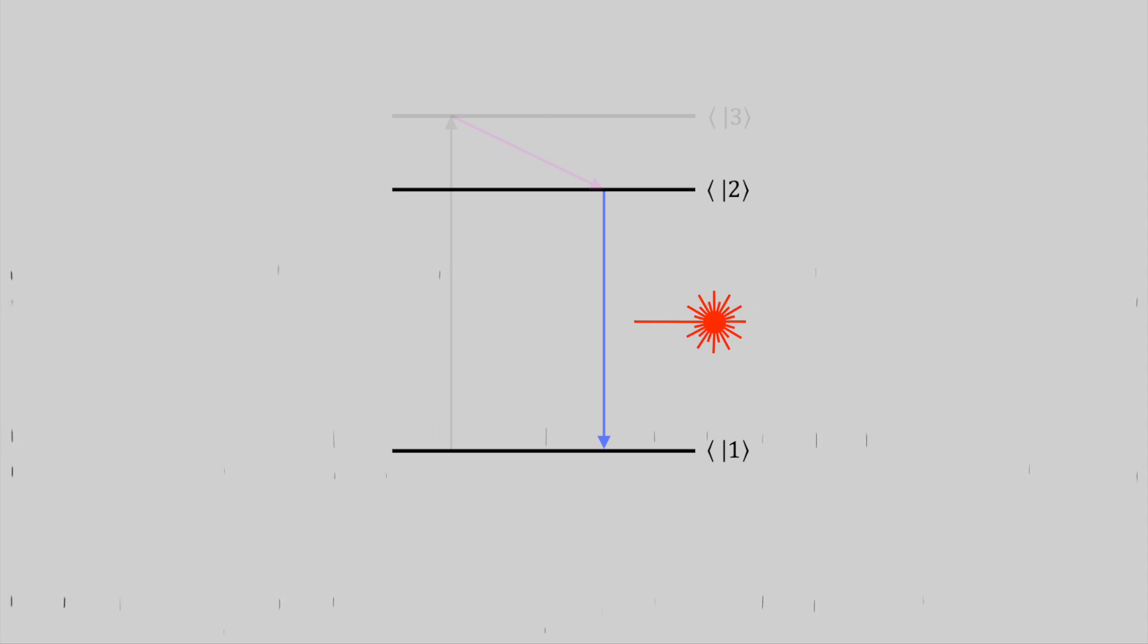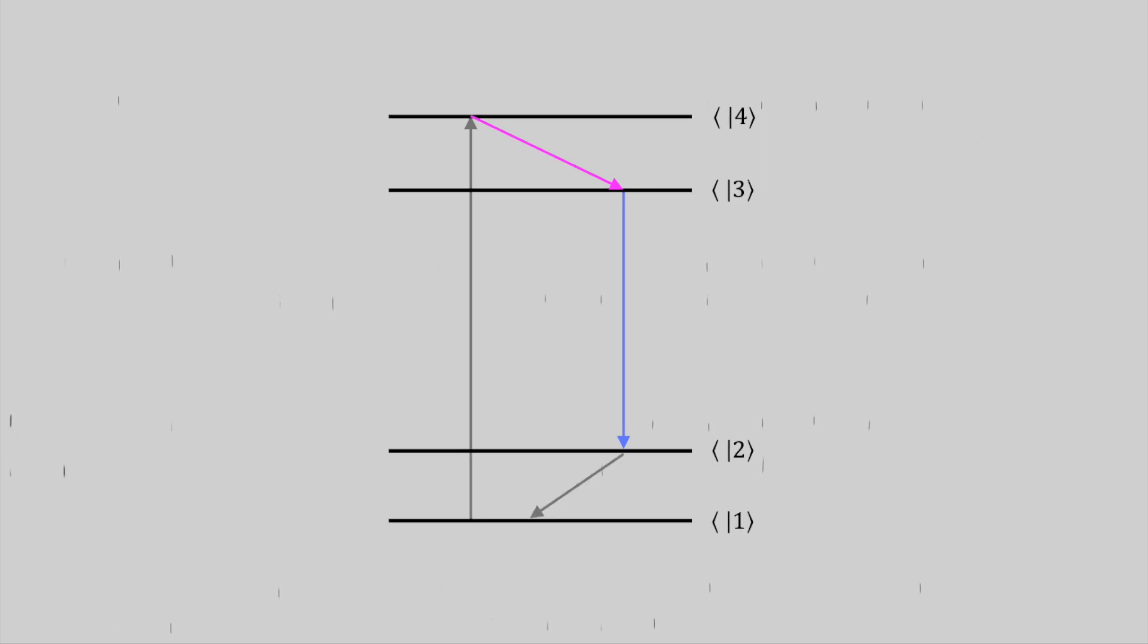So the only downside of this three-level system is that we need a lot of energy to get all the electrons from level one to level three. This, of course, sucks. So what do we do? Fairly simple. We just add another energy level to make it a four-level system.